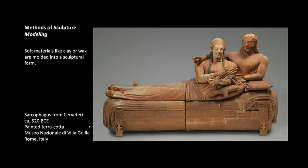You can also model. Modeling is different from carving. Working with clay and ceramics is a really great example of modeling — it's usually a soft material like clay or wax molded into a sculptural form. Here's a wonderful ancient example of a sarcophagus — something that housed a dead body prepared for burial — from the Etruscan culture, an ancient culture that lived in the Italian peninsula before the Greeks and Romans came. They loved clay, especially terracotta, which has a wonderful red color you're probably familiar with from hardware store plant pots.